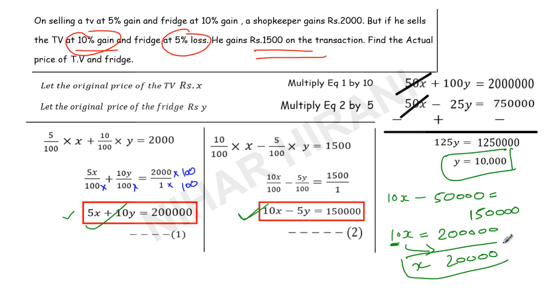So the price of the TV is Rs. 20,000 and the price of the fridge is Rs. 10,000. I hope you found this video useful. Don't forget to press the like button — thanks for watching!